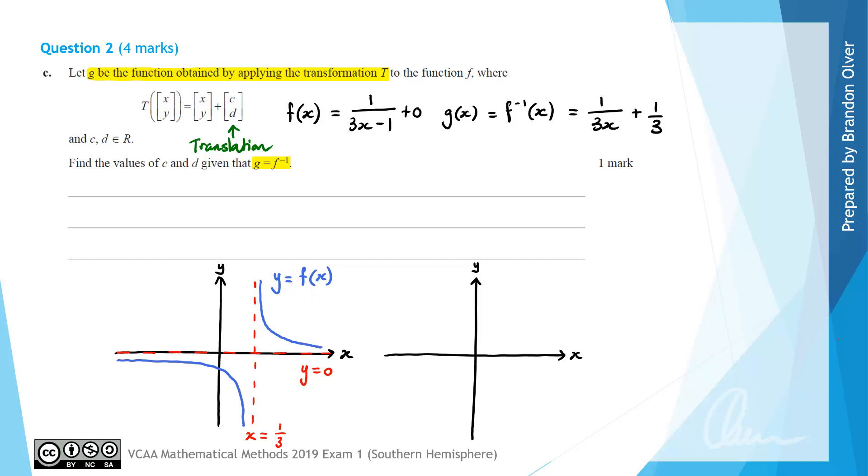On the second set of axes, I'm going to sketch the inverse graph. It has an asymptote at x equals 0 because we can see 1/(3x). When x is 0, we'd be trying to divide by 0, which isn't possible. That's where our asymptote occurs. This is x equals 0.